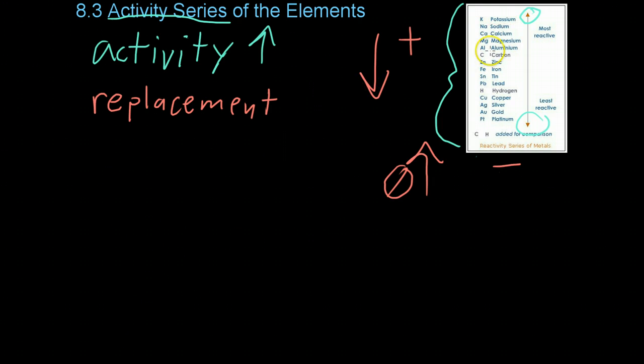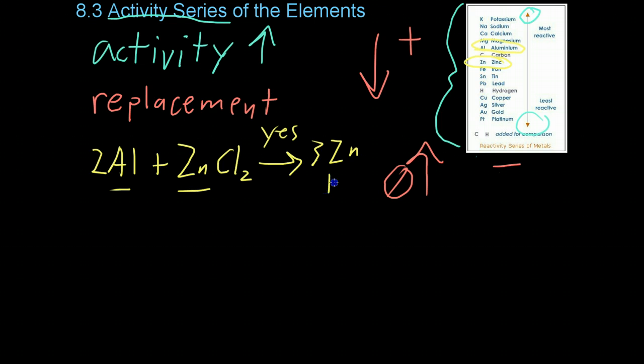To give you a quick real-world example, if we compare aluminum, which is right here, with zinc, which is two slots below it, let's say you had aluminum and zinc chloride. Now, because aluminum is higher up, that is, more reactive than the zinc, then this reaction would take place. And it would, if you were to write out the whole thing, it would be zinc and aluminum chloride.